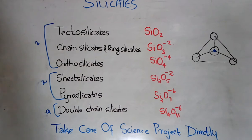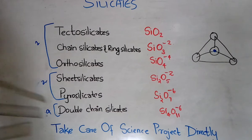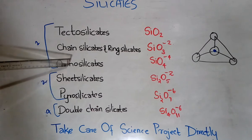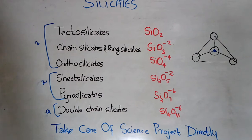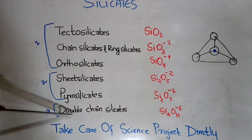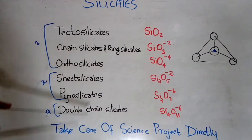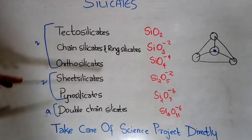Now we have established the order: tecto, chain, ortho, sheet, pyro, and double chain silicates. Next, we divide this set of silicates into three groups — the first group has 1 member, the next group has 2 members, and the last group has 3 members. So starting from the bottom, we are dividing into 3 groups each having 1, 2, and 3 members respectively.